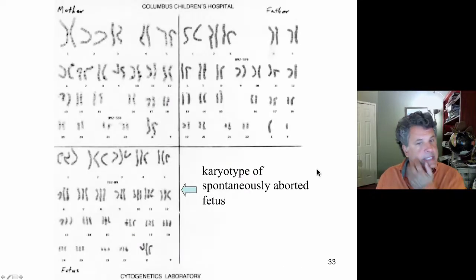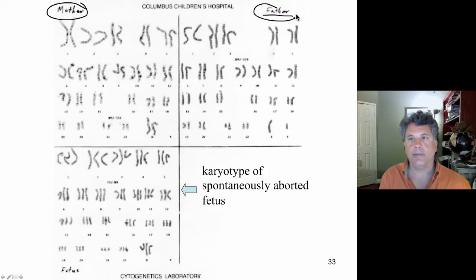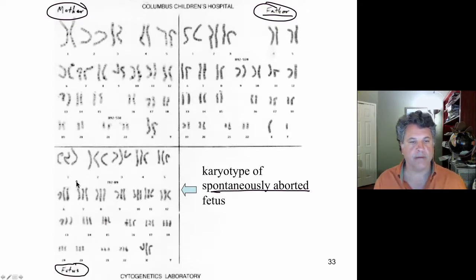All right. Now here's an interesting case, a real case scenario. We're looking at the karyotype, the chromosome composition of the father, the mother, and then this is a spontaneously aborted fetus. This was a miscarriage relatively late at about five weeks of pregnancy. And what you see here is that this fetus, which was spontaneously aborted, it died. It was triploid.